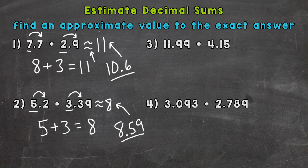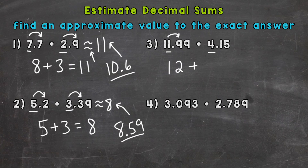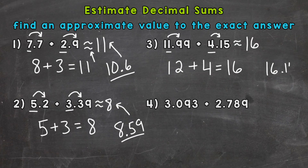Number 3: we have 11 and 99 hundredths plus 4 and 15 hundredths. Round to the nearest whole number, which is the ones place. Looking next door, that rounds up to a 2 — so 11 and 99 hundredths is closer to 12 than to 11; it's actually very close to 12. 4 and 15 hundredths rounds to 4. So 12 plus 4 gives us an estimate of 16. The exact answer is 16 and 14 hundredths — very close to our estimate.